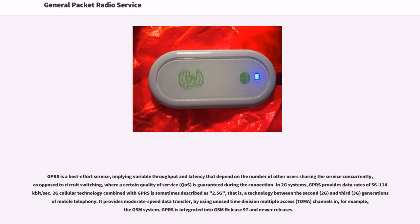2G cellular technology combined with GPRS is sometimes described as 2.5G — that is, a technology between the 2nd (2G) and 3rd (3G) generation of mobile telephony. It provides moderate-speed data transfer by using unused time-division multiple-access (TDMA) channels in, for example, the GSM system.